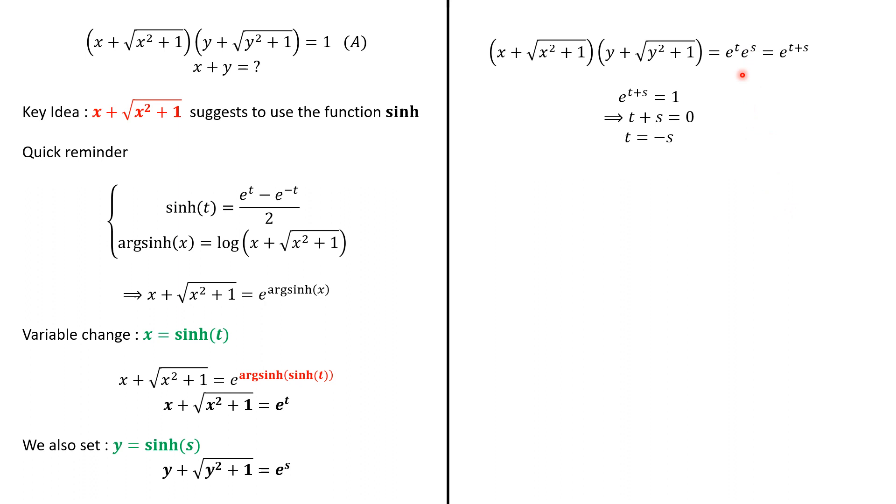Now, sinh is an odd function. So, sinh(t) = -sinh(s). And sinh(t) is x, and sinh(s) is y. So, x = -y. And therefore, again, x + y = 0. And we're done.